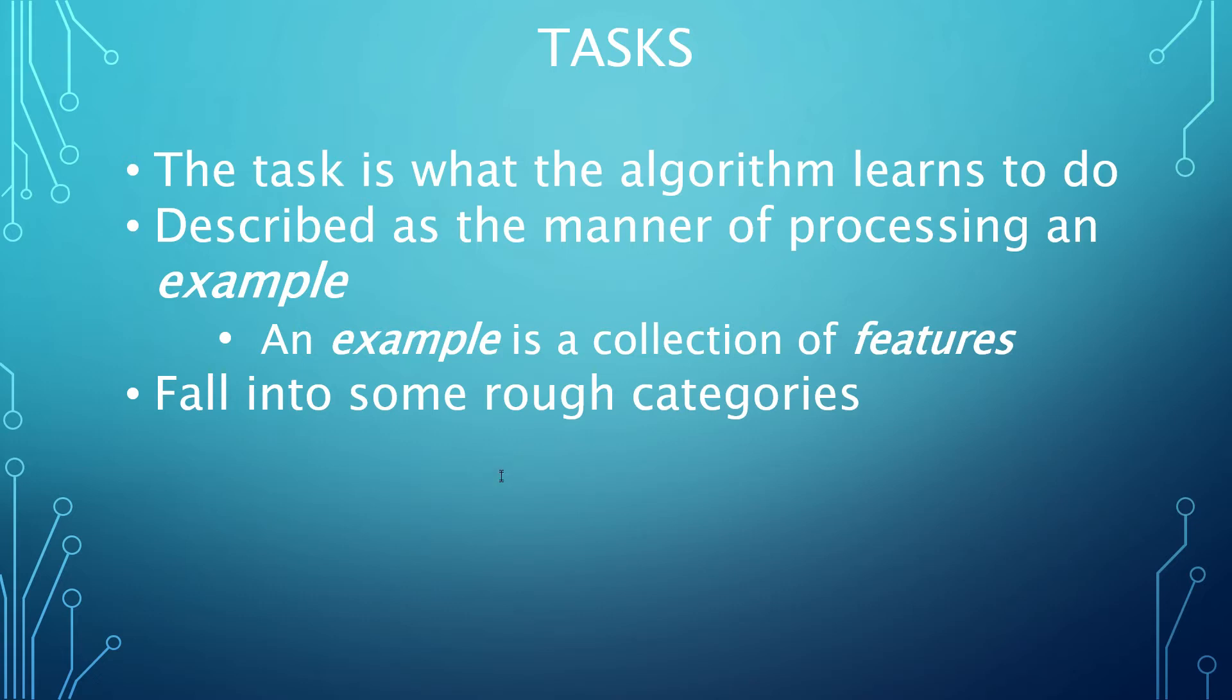Tasks are described in terms of how an example is processed. An example is a collection of features, which might be measured from some object or event. For example, the features of an image could be the values of the pixels in the image. While tasks can vary in large ways, there are generally some common categories the tasks for learning fall into.